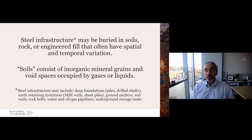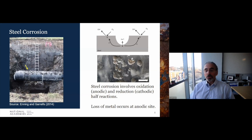An important factor is that there can be spatial variations in the aggressiveness of the environment from centimeters to kilometers, as well as time variations that might be seasonal or much longer, associated for instance with global warming. All of these factors are important in assessing corrosion. In the report, we have a short tutorial about the fundamentals of corrosion. Corrosion involves oxidation, which is an anodic process, and reduction, which is a cathodic process — those are half reactions that together constitute the corrosion phenomenon. It's the anodic process that creates the loss of metal, which can form pits as shown in the schematic.